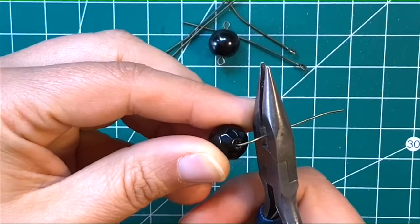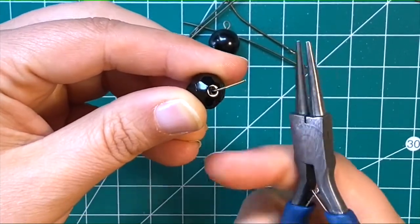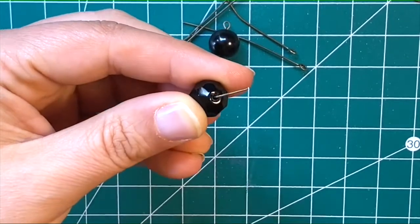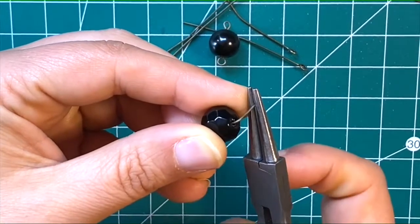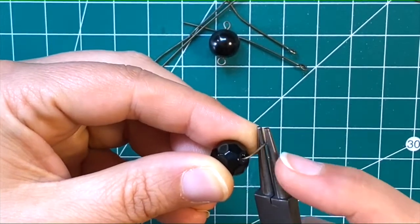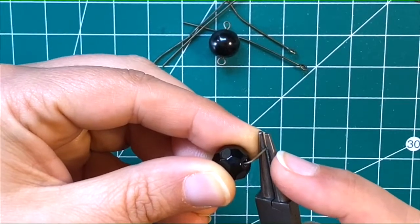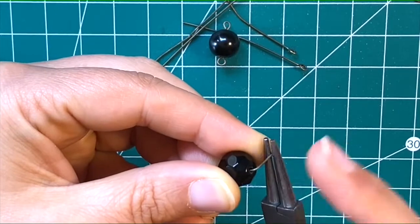Take your pliers - I'm using my chain pliers - and cut off that wire at around the eight to nine millimeter level. Then take your round nose pliers to create that loop. One good tip: if you want to make sure each loop is equal, make a mark on your pliers at the point you'll use every time.